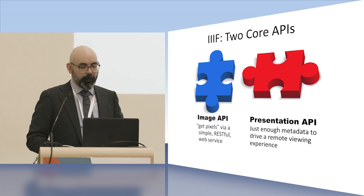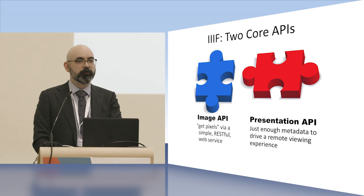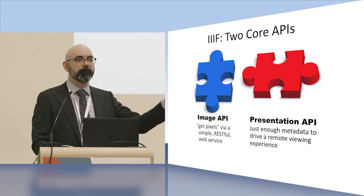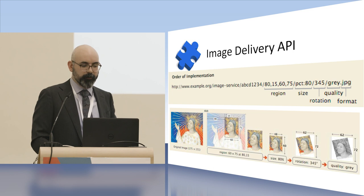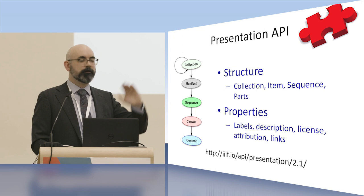The main thing driving IIIF is these two core APIs: the Image API and the Presentation API. The Image API delivers pixels. The Presentation API delivers just enough structure to make the viewing experience work. There are manipulations you can make using the Image API. The Presentation API delivers sequence, table of contents, and basic metadata.